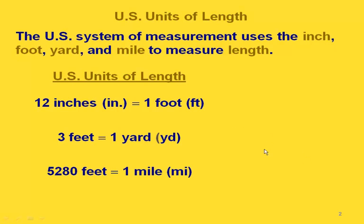Here are some U.S. units of length: twelve inches equals one foot, three feet equals one yard, and 5,280 feet equals one mile. Notice that we have the abbreviations for each unit — inches is IN, feet is FT, yards is YD, and miles is MI.